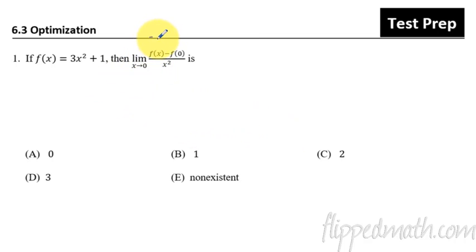If we plug in the zero, you'll end up with zero into the x there, you'll end up with zero over zero. So when we get that situation, that's where we can use L'Hopital's rule.